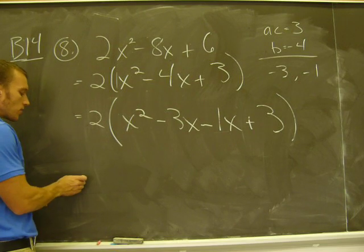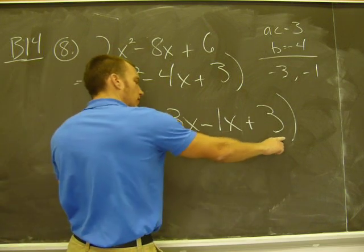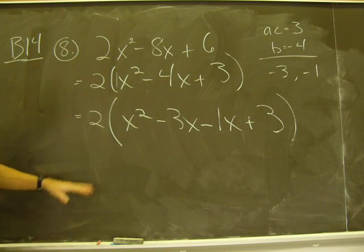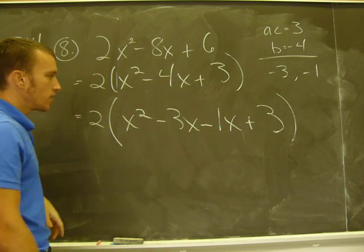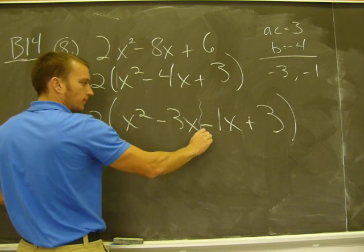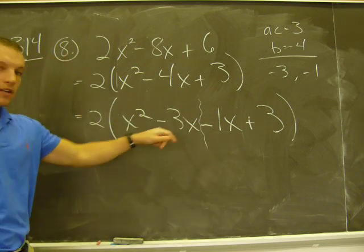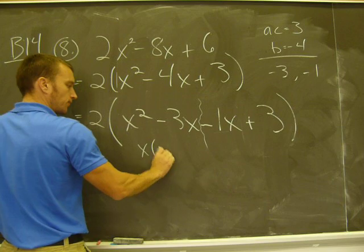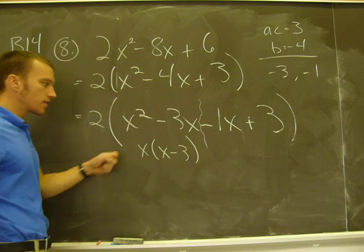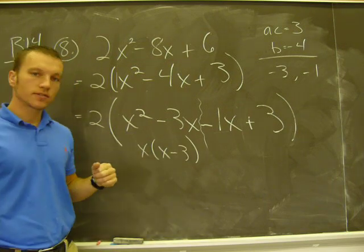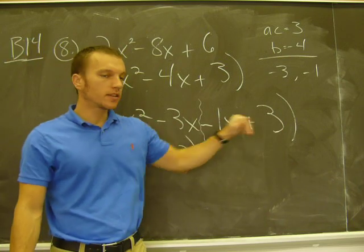Now, so what I'm actually going to do is just work with this. I'm going to leave this 2 outside and I'll bring it back at the end. What I want to do now is just work with what I have in here. So the next step would be to factor the greatest common factor out of these two guys, which is x, and that would leave me with an x minus 3.